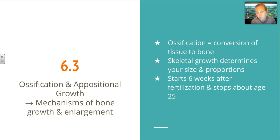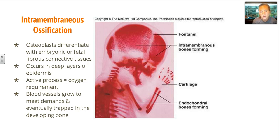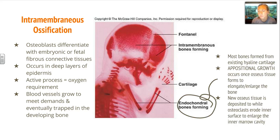Section 6-3 covers ossification and appositional growth. Ossification is the conversion of tissue to bone. Skeletal growth determines your size and proportions, starts at about week 6 after fertilization, and stops at about age 25. Intramembranous ossification differentiates with embryonic or fetal fibrous connective tissue — you can see this with the skull forming bone, which is why you must be careful with an infant's head. It occurs in deep layers of the epidermis, requiring oxygen, and blood vessels become trapped inside the bone. Endochondral ossification is where bone forms from existing hyaline cartilage, and most bones form this way.